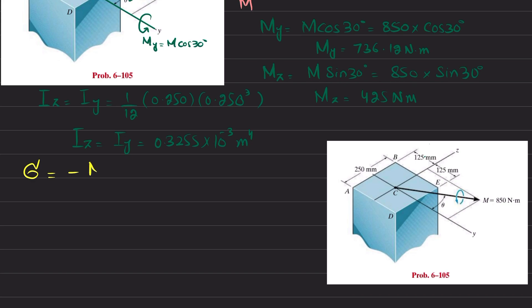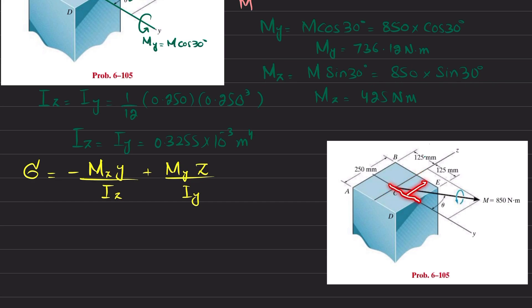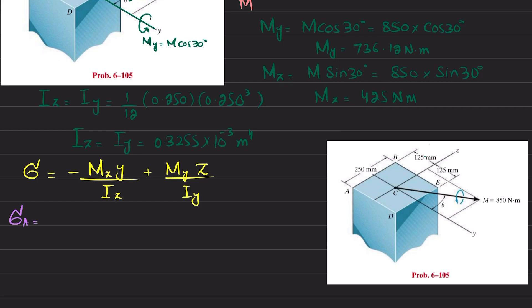Now we will find the stress distribution. For unsymmetrical bending, stress is given by: σ = (Mz · y) / Iz + (My · z) / Iy, where y is the distance from the z-axis and z is the distance from the y-axis — positive in one direction, negative in the opposite.